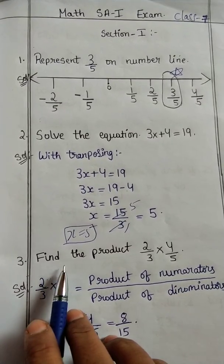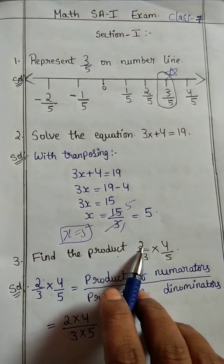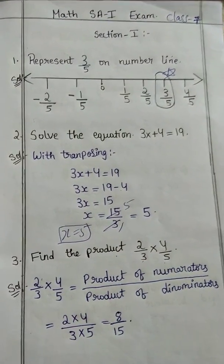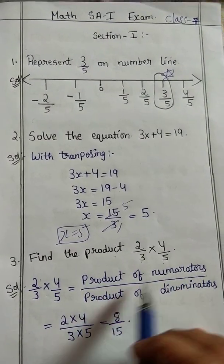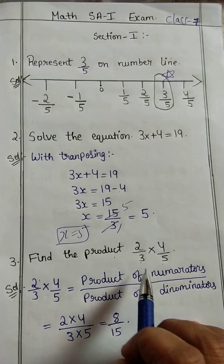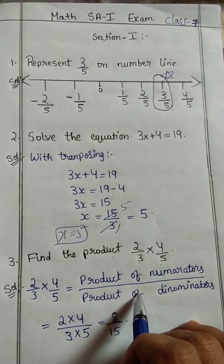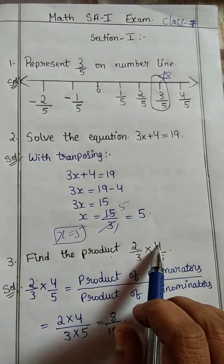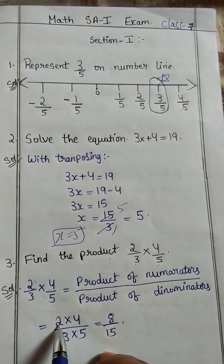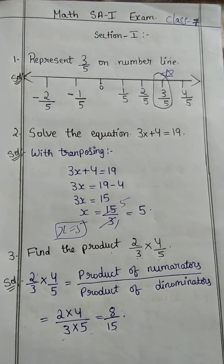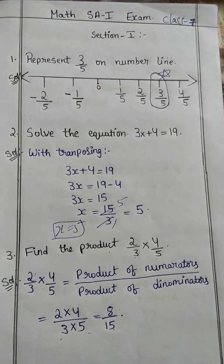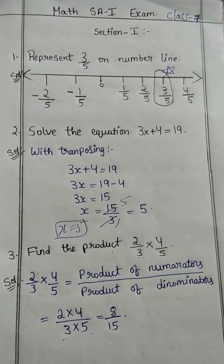Third question: find the product 2 by 3 into 4 by 5. Very simple. Product of numerators by product of denominators. Numerators and denominators we multiply: 2 times 4 is 8, 3 times 5 is 15. So 8 by 15.